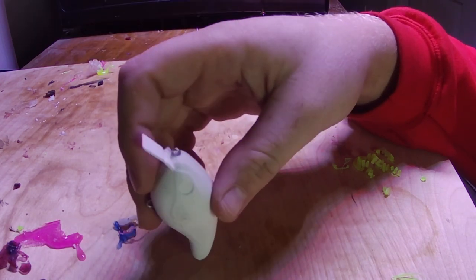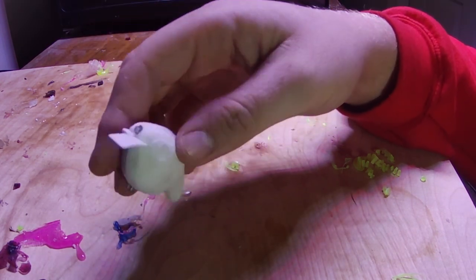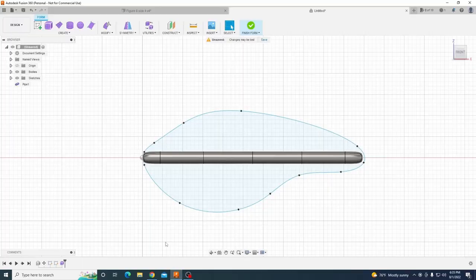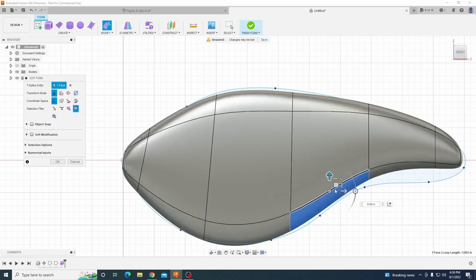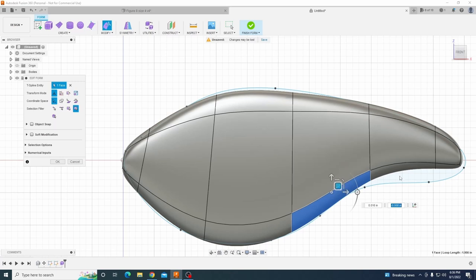So we're going to get into how I made this lure and give a little bit of background on how it swims. We're going to model this bad boy out on Fusion 360 and I'm going to print it out on my Ender 3. I don't really use squarebills too much, but I'm sure some of you guys will get good use out of this thing.